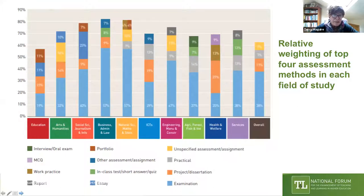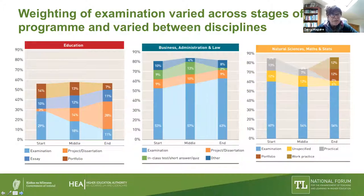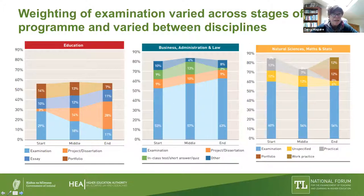Another interesting finding is that the use of examinations differs depending on the stage of learning. In education, the level of examination is higher in first years than in final year. In business administration and law, there's a slight increase from first year to final year. In the natural sciences, it starts at about 60% and ends up not far away. So there is a difference in how we're using examinations across the stages of a program.